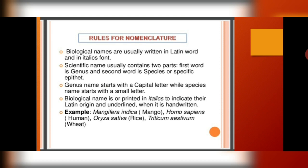There are certain rules for nomenclature. Biological names are usually written in Latin and in italics font. Whenever you see italics font, that means it is the scientific or biological name of an organism. Scientific names contain two parts: the first word is the genus name and the second is the species or specific epithet. The genus name always starts with a capital letter, while the species name always starts with a small letter. If printed, biological names appear in italics; if handwritten in your notebook, you are supposed to underline them with a discontinuous line.